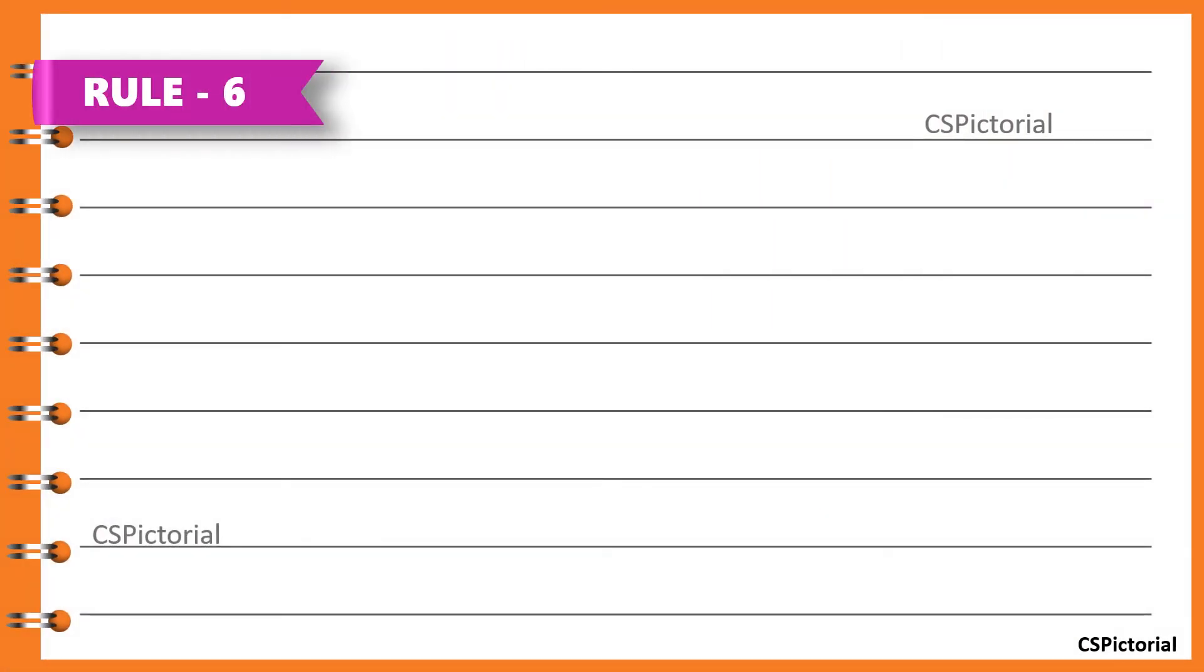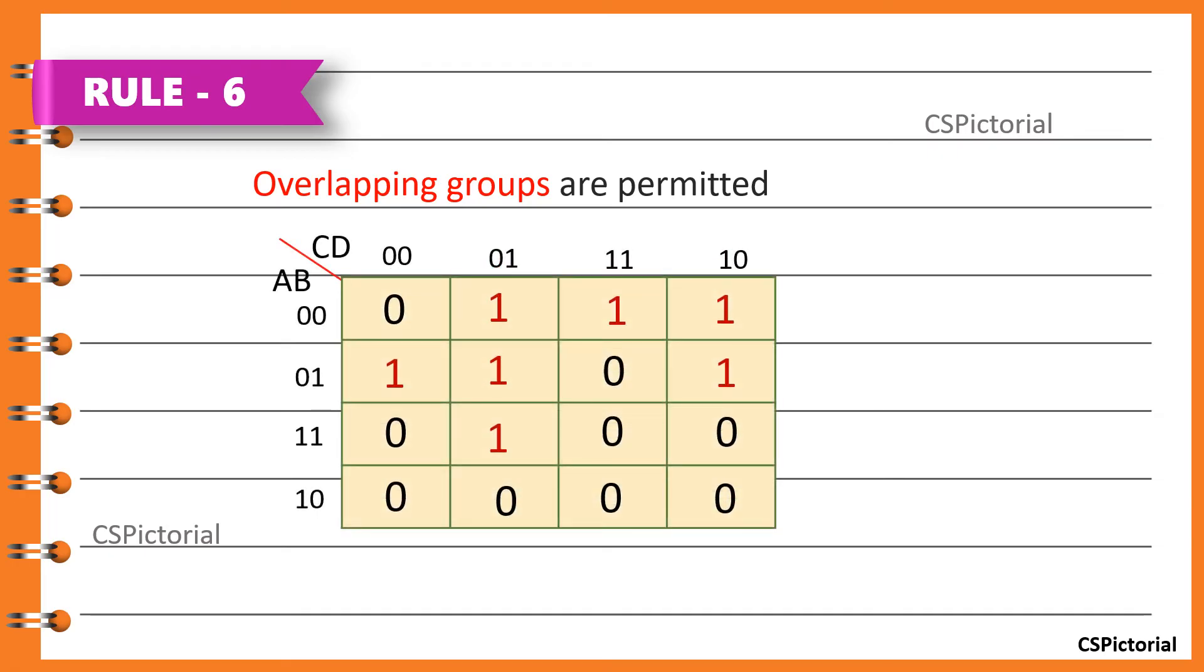Another rule states that overlapping groups are permitted. As we have seen in the previous example itself, groups may overlap whenever possible to make larger groups and to cover up all the ones in the K-map. The same cells might overlap any number of times until all ones get covered.